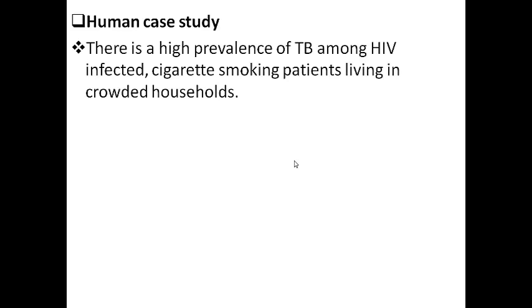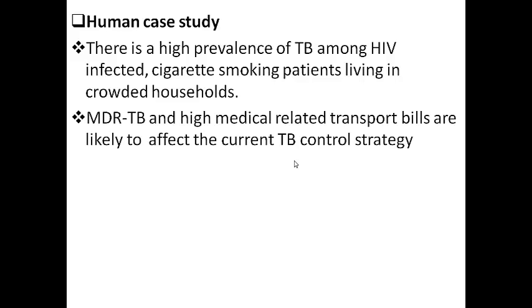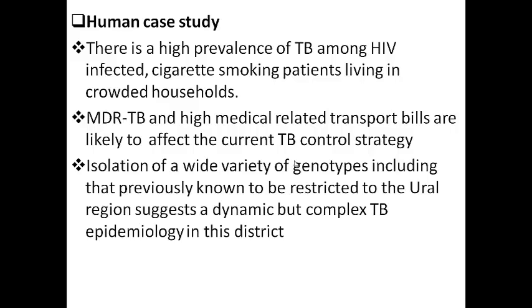The case study in humans found a high prevalence of TB in HIV-infected individuals who are smoking and also living in households that are much more crowded. MDR TB and high medical-related transport bills will be and are most likely to be the bottleneck to the current control strategy.